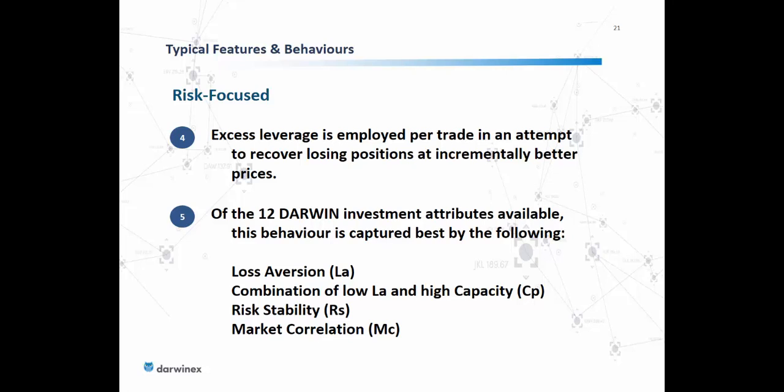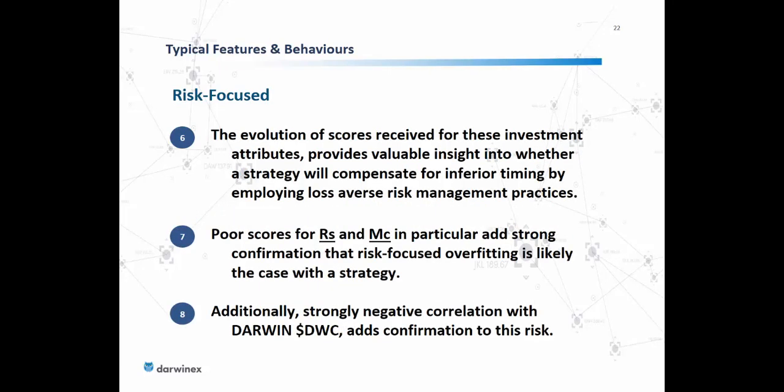Excess leverage is also employed per trade in an attempt to recover losing positions at incrementally better prices. Of the 12 investment attributes available, this risk-focused overfit behavior is captured best by: loss aversion — specifically a combination of low loss aversion and high capacity scores — risk stability score, and market correlation score. Poor scores for risk stability and market correlation add strong confirmation that risk-focused overfitting is likely the case, and a strong negative correlation with Darwin DWC adds even more confirmation.